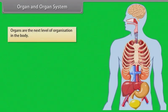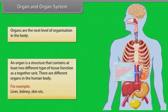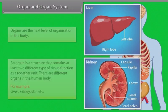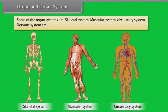Organs are the next level of organization in the body. An organ is a structure that contains at least two different types of tissue and functions as a unit together. There are different organs in the human body — for example, liver, kidney, and skin. An organ system is composed of two or more different organs that work together to provide a common function. Some organ systems include the skeletal system, muscular system, circulatory system, and nervous system.